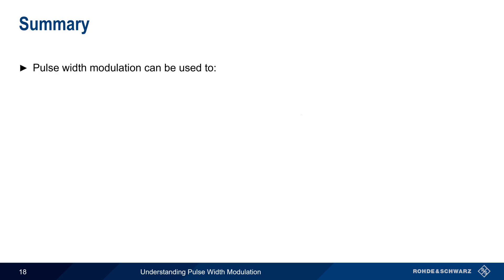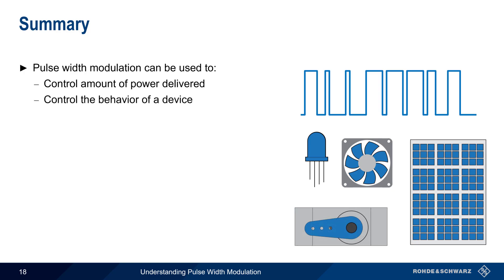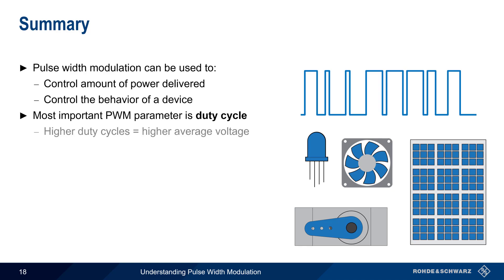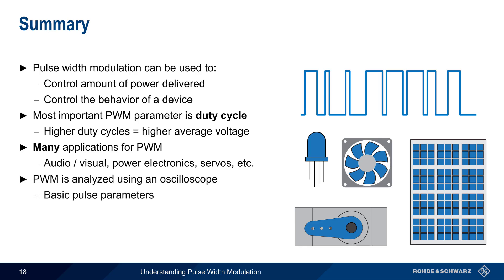Let's end with a brief summary. Pulse width modulation provides voltage in the form of pulses and is commonly used for controlling the amount of power delivered to a device, or for controlling the behavior of a device. The most important parameter of a pulse width modulated signal is duty cycle — increasing the duty cycle creates higher average voltages, and decreasing the duty cycle decreases average voltage. There are many applications of pulse width modulation, including audio and visual applications, power electronics, servo control, etc. Pulse width modulation is analyzed using oscilloscopes, either by measuring basic pulse parameters such as duty cycle, or by using a track measurement to visualize the change in duty cycle over time. This concludes our presentation, Understanding Pulse Width Modulation. Thanks for watching.